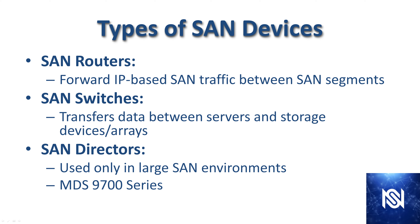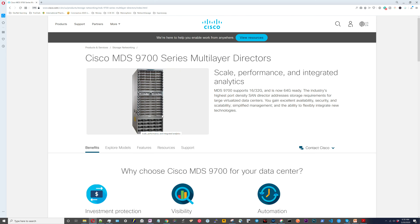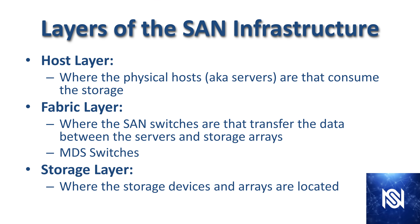There are different types or levels of SAN devices. SAN routers forward IP-based SAN traffic between SAN segments. SAN switches transfer data between servers and storage device arrays. SAN directors are used only in large SAN environments — they would be the MDS 9700 series. Looking at the Cisco MDS 9700 series, you can see these are large chassis-based systems used for very large storage area networks.